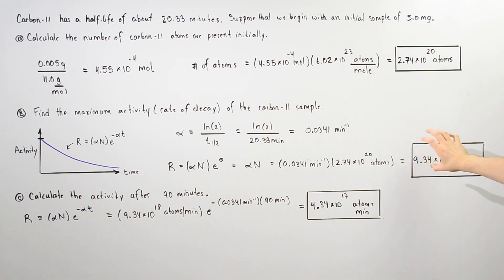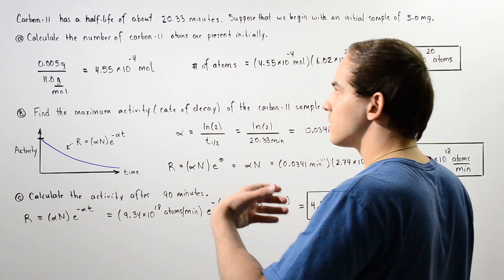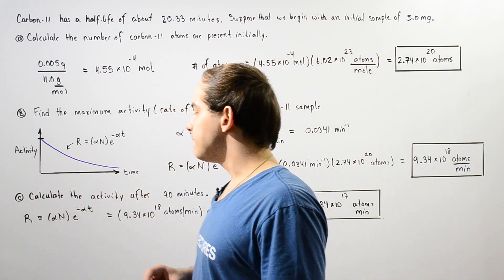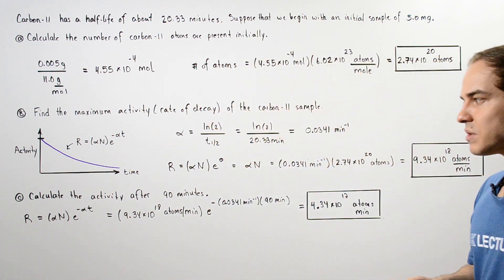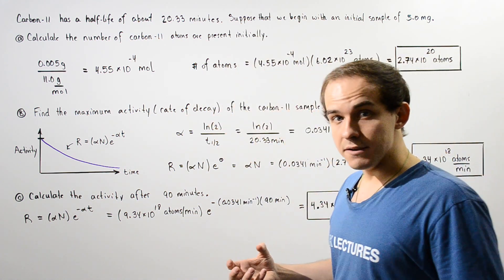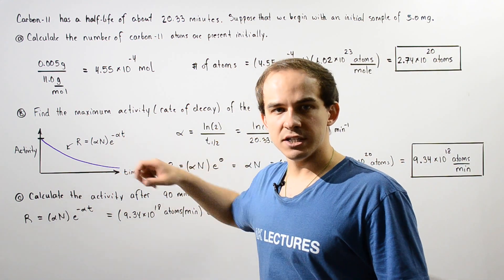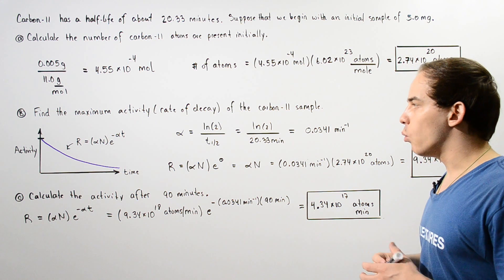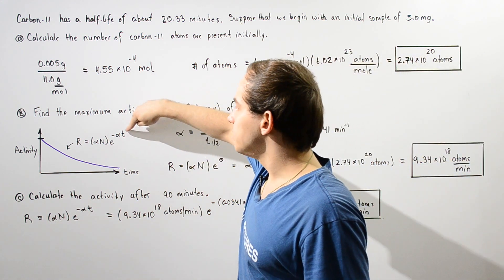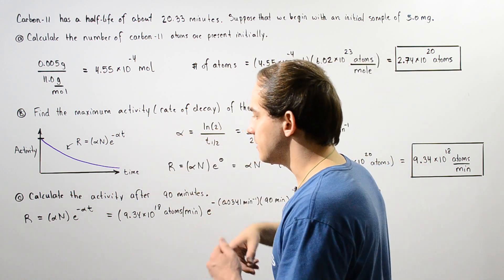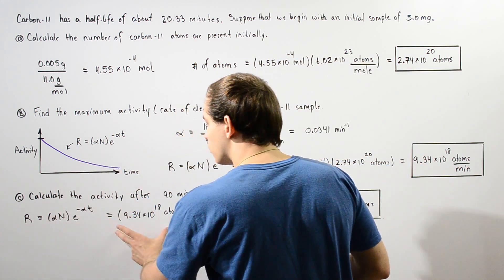This is the activity of our isotope of our carbon-11 at a time of zero. Now finally, let's move on to part C. Calculate the activity after 90 minutes. So basically we have to use this equation. Now that we know what our alpha is, we simply plug in a time of 90 minutes for this T.